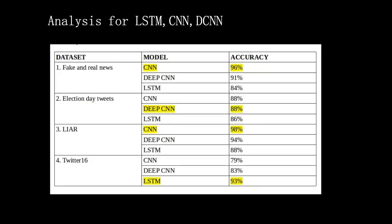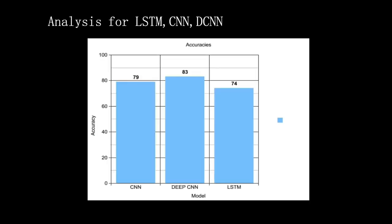Here are the results for the classification that we did with each model. These are the observed results of the models which we have experimented along with the proposed model. We have used four types of datasets. First dataset is fake and real news. The models used are CNN, Deep CNN, and LSTM. The accuracy observed in CNN model is 96%, in Deep CNN it is 91%, and in LSTM it's about 84%. The fourth dataset is Twitter 16. In this CNN model, the accuracy observed is 79% and Deep CNN shows the accuracy of 93%.